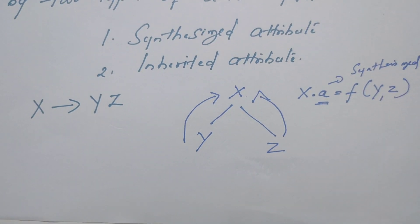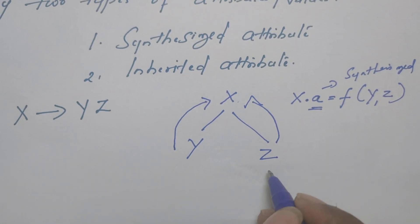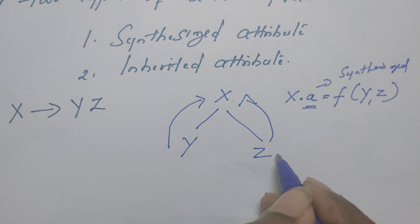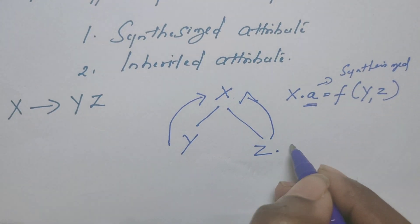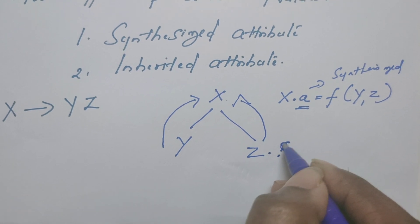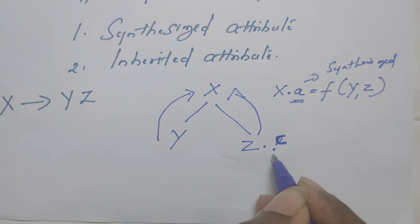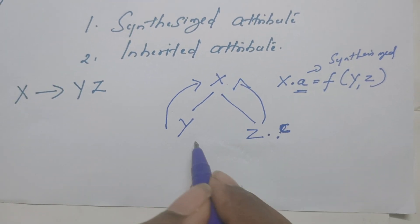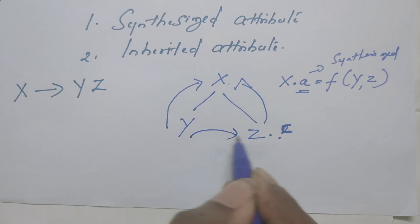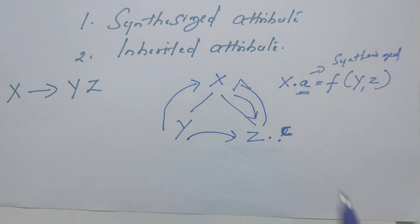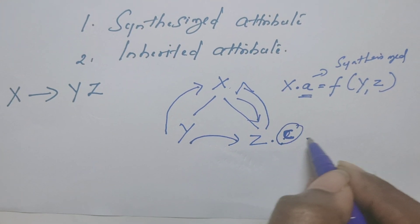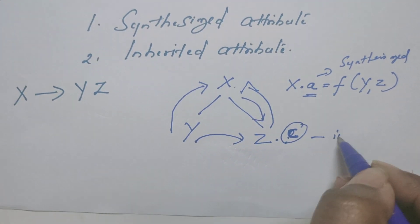So what is inherited attribute? Suppose we consider the symbol Z. If the value at Z — let us call it C — is calculated either from Y or from X, then we can call C an inherited attribute.